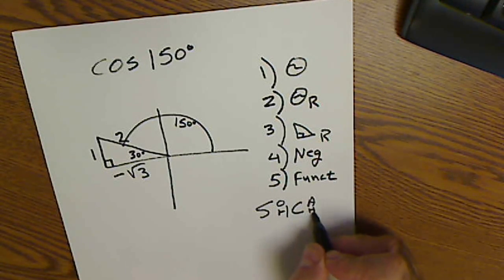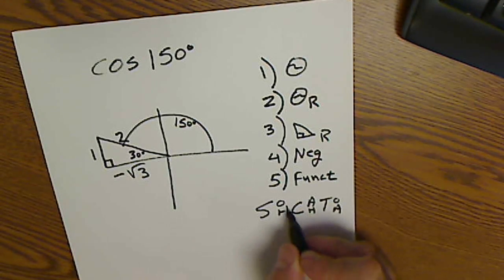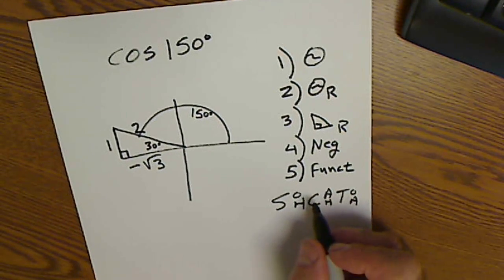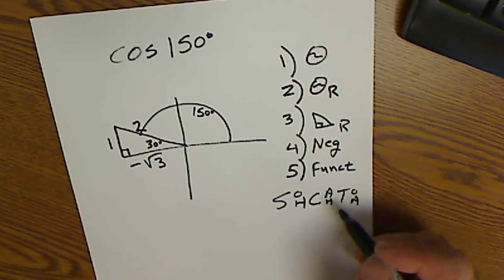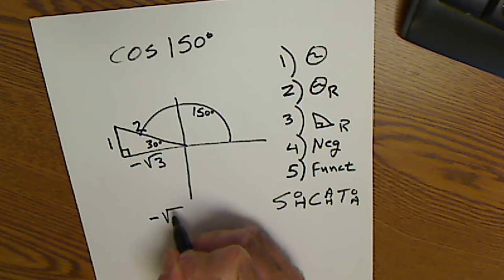So CAHTOA, so I have cosine of 150. Cosine is adjacent over hypotenuse, so my answer is negative root 3 over 2.